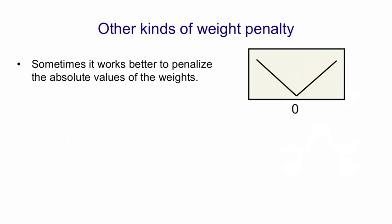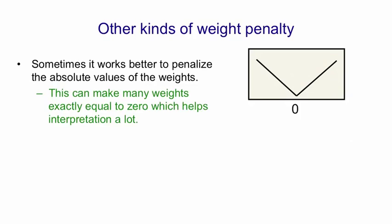There are other kinds of weight penalty, for example an L1 penalty where the cost function is just this V shape. So here what we're doing is we're penalizing the absolute values of the weights. This has the nice effect that it drives many of the weights to be exactly zero and that helps a lot in interpretation. If there's only a few non-zero weights left it's much easier to understand what's going on.